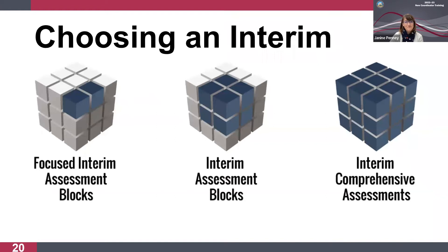There are three types of interim assessments. Focused interim assessment blocks, or focused IABs, are the most granular, assessing one to three targets in math and ELA literacy. They cover a smaller amount of learning content compared to other types of interim assessments. Interim assessment blocks, or IABs, assess one to eight targets. These are shorter assessments targeting specific instructional content and generally can be completed in one class period. Interim comprehensive assessments, or ICAs, assess the same range of standards as well as the same item types and format as the summatives.